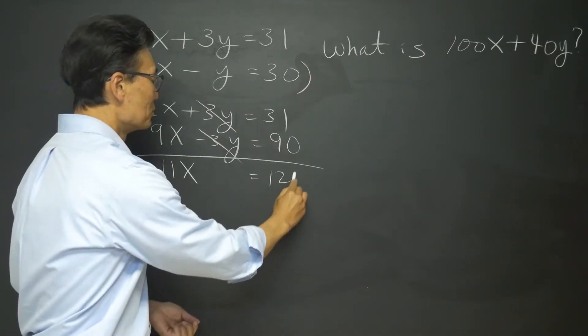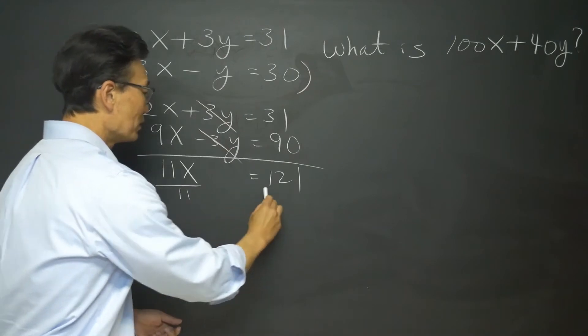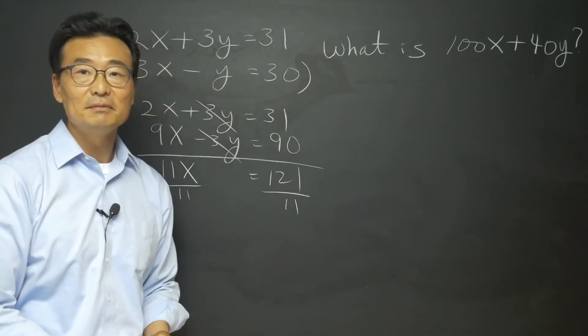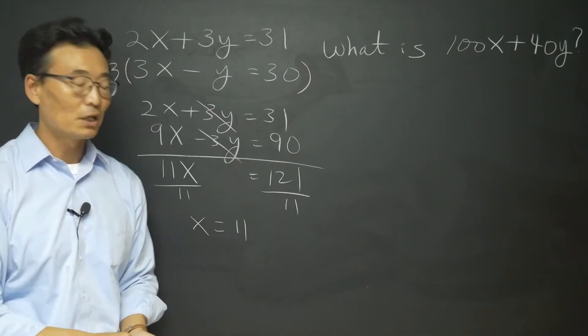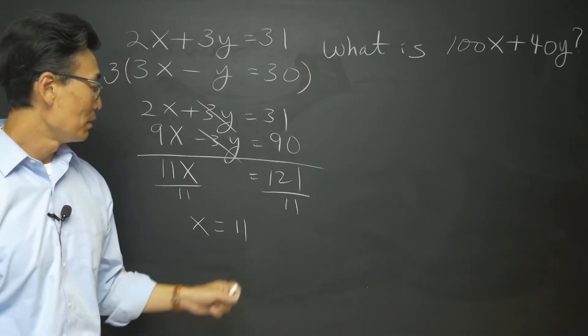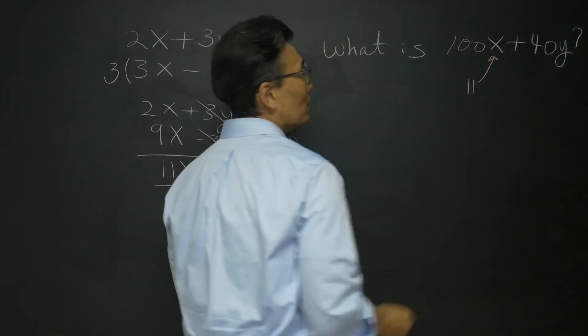11x equals 121, then divided by 11 on the left and the right side, we get x equals to 11. All right, so we found the value of our x, so we're going to be plugging in 11 right there.